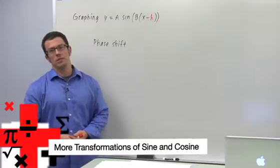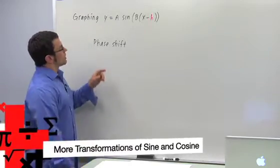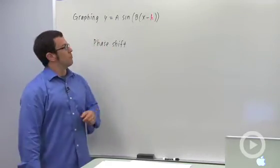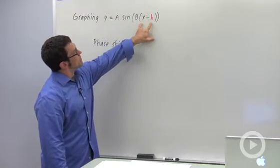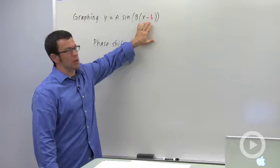I'm graphing transformations of sine and cosine, and I've already talked about graphing y equals a sine of bx. So I want to talk about graphing y equals a sine of b times the quantity x minus h. This part is new.